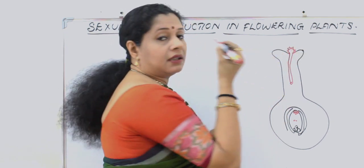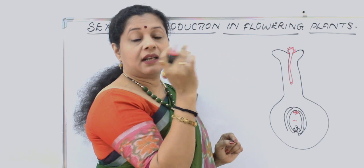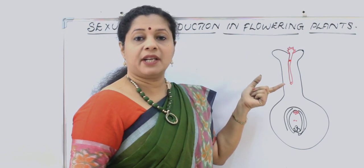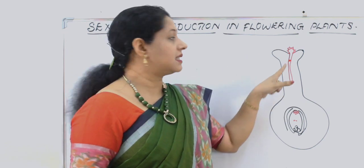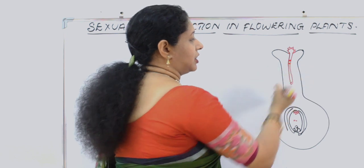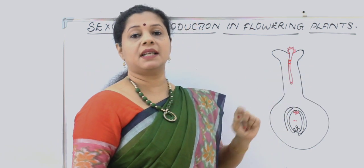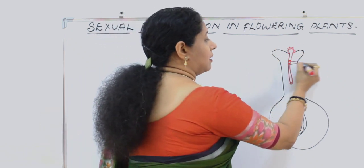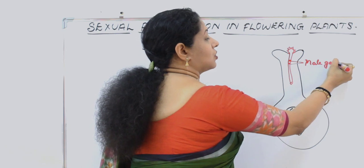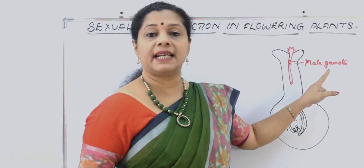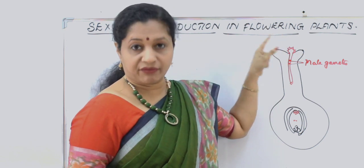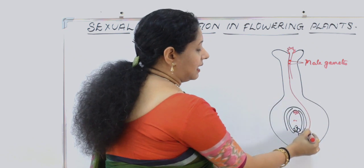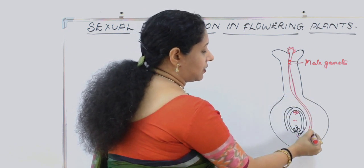Inside the pollen tube, the generative nucleus is present and the generative cell comes down. In 60% of plants, division happens after entering the pollen tube, producing two male gametes, whereas in 40% of plants this happens prior to pollen germination. These two are called male gametes. Since pollen carries male gametes, we call the pollen grain the male gametophyte. The pollen tube grows and enters through the micropylar end in most cases.